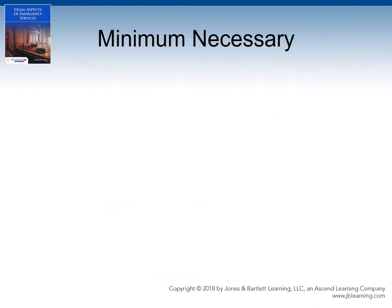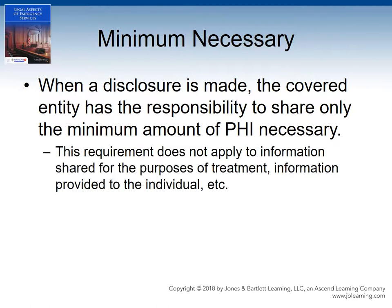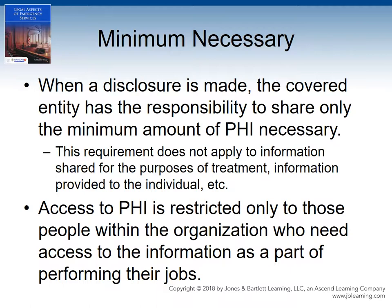The Privacy Rule also contains something known as the minimum necessary provision. When a disclosure is made, the covered entity has the responsibility to share only the minimum amount of protected health information necessary to accomplish the purpose of the disclosure. This minimum necessary requirement does not apply to information shared for the purposes of treatment, information provided to the individual, and in a few other limited circumstances. Additionally, access to the protected health information must be restricted only to those individuals within the organization who need access as part of performing their jobs. Thus, when making a disclosure, a covered entity must not only attempt to minimize the protected health information shared, but also ensure only those individuals necessary for processing the information receive it.